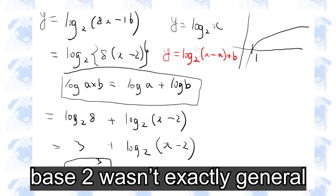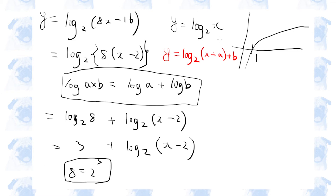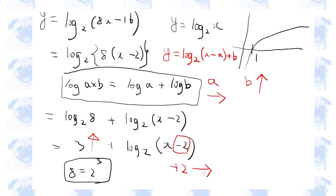In general, the graph of log base 2 of (X minus A) plus B can be obtained by shifting the original function by A units along the X-axis and B units along the Y-axis — in this case, 3 units upwards and 2 units to the right.